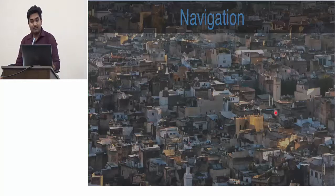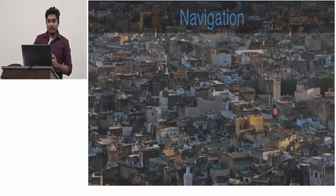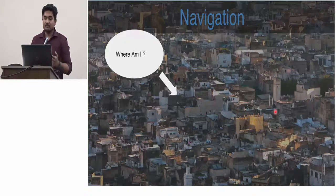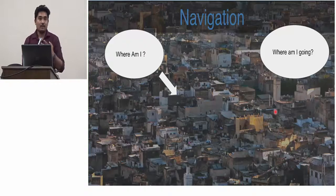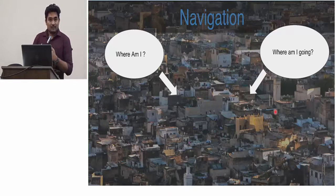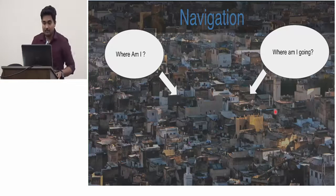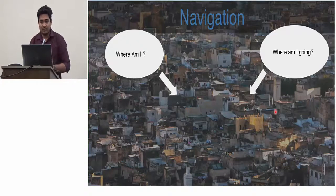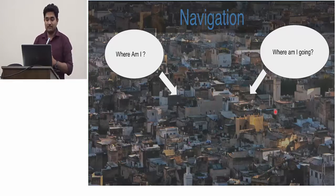So about navigation. When you are going somewhere you have actually two questions in mind. The first one is where am I, and the second one is where am I going. In between there may be many questions like what is the shortest distance between your start and final goal and which route do you want to take. Google has basically been working on this project for the last five years, and they have used reinforcement learning.